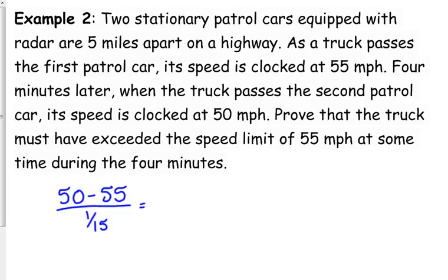So, 50 minus 55, negative 5 over 1 over 15 is negative 5 times 15 over 1, which gives us negative 75 miles per hour. So, here is his average velocity. Now, it's negative just because of the direction here. So, we're not really concerned about that. We're just concerned about speed. So, anyways, his average velocity over this interval is 75 miles per hour. So, that means at least somewhere on this interval, he had to have been traveling 75 miles per hour.